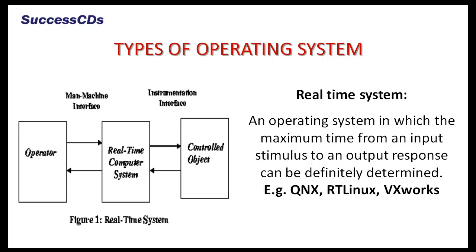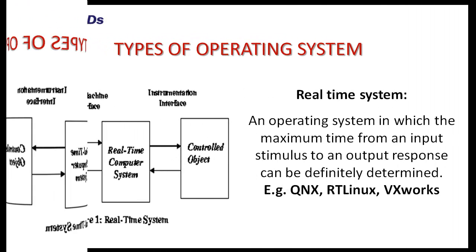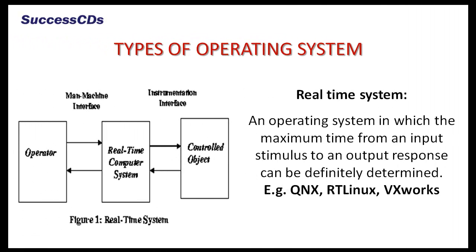The last type is real-time system — an operating system in which the maximum time from an input stimulus to an output response can be definitely determined. For example, QNX, RTLinux, and VxWorks.